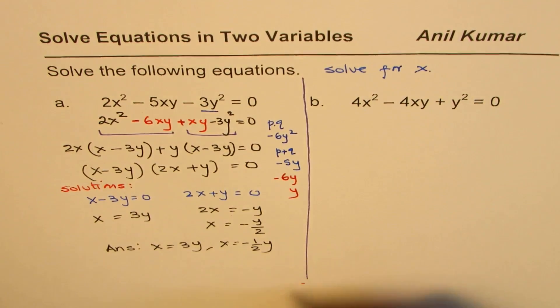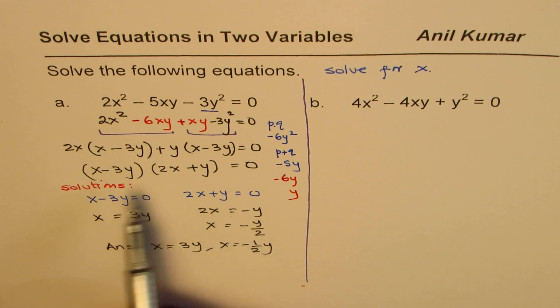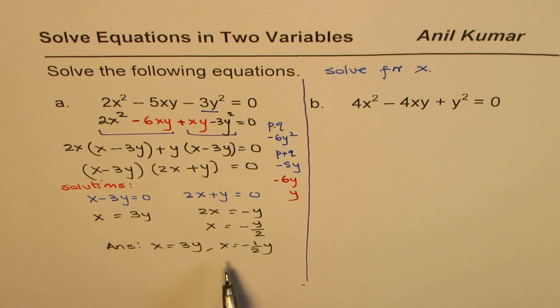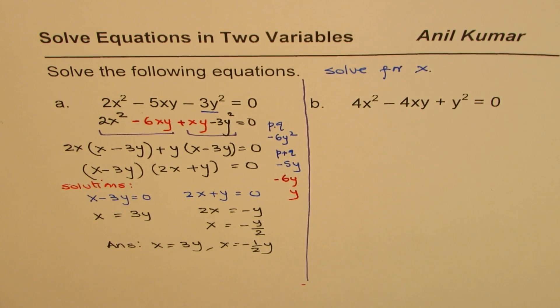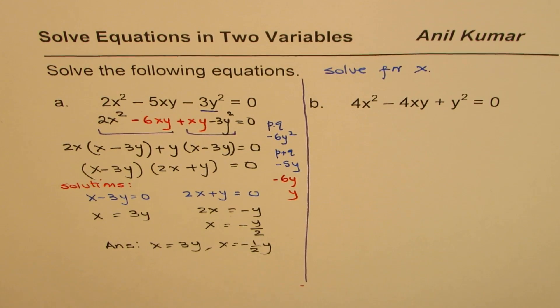So even if the equation has two variables, treat it as one variable and apply the concepts which you have learned. So here we applied the product and sum technique to factor, and then each factor should be equated to 0 to find the value of x. That's what we call solving equations. Now let's do the next one. You can actually now pause the video, answer the question, solve this part, and then look into my suggestions.